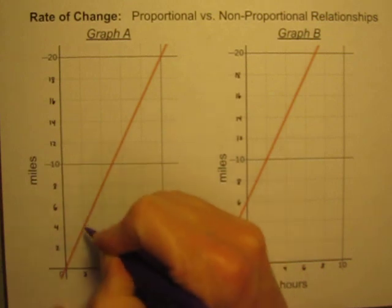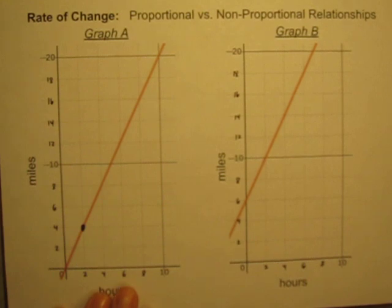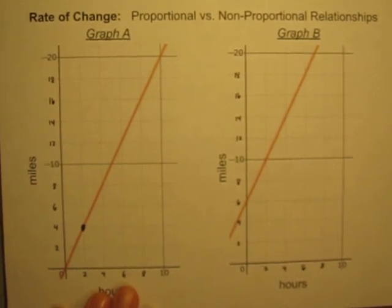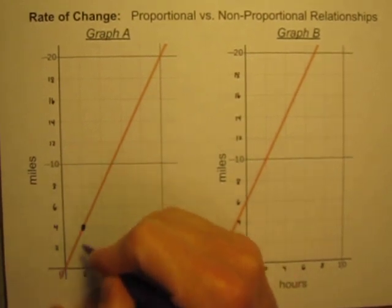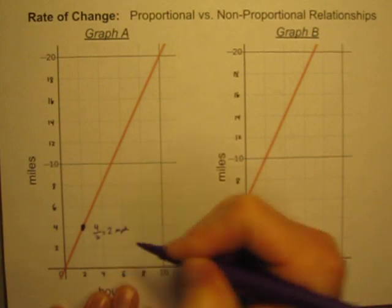And so, after two hours time, the position of this object has changed to four miles. So, I can say it has traveled from zero to four. It has gone four miles in two hours, or two miles per hour.